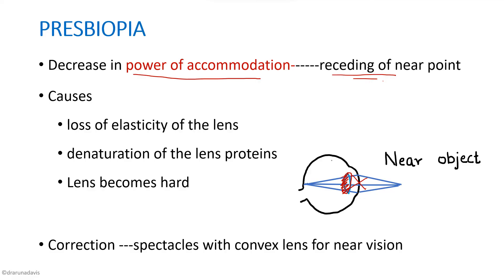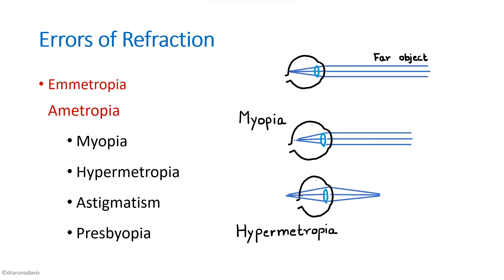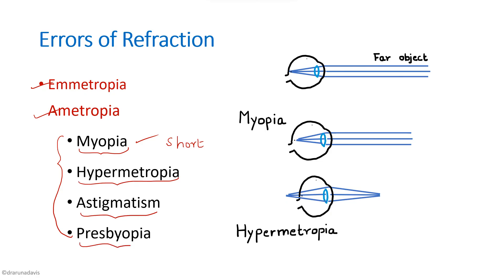Presbyopia is corrected by giving spectacles with a convex lens for near vision. To summarize errors of refraction: we have emetropia (normal vision) and ametropia, which has four types — myopia (short-sightedness), hypermetropia, astigmatism, and presbyopia. You should also draw diagrams for these in the exam. I hope the concept is clear and you know what to write for the exam. Thank you.